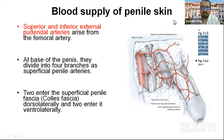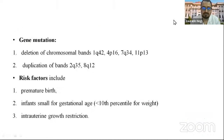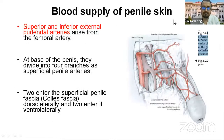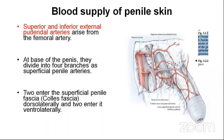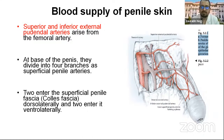Blood supply of the penile skin. The penis is mainly supplied by two branches of the femoral artery, which are the superior and inferior external pudendal arteries. At the base of the penis, it divides into four superficial branches which enter the penis — two branches enter the dorsal artery and two branches enter the ventral artery.